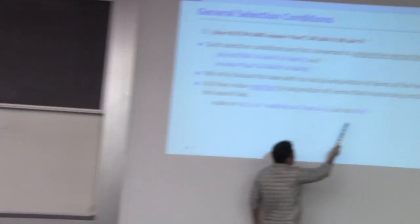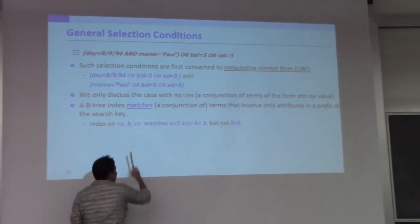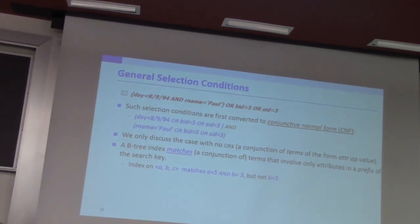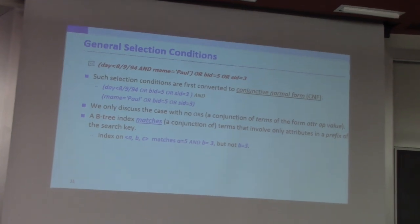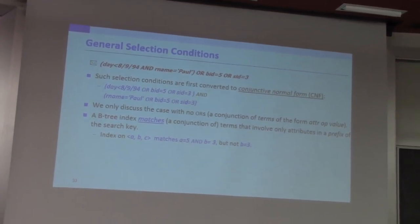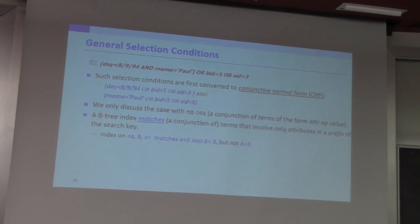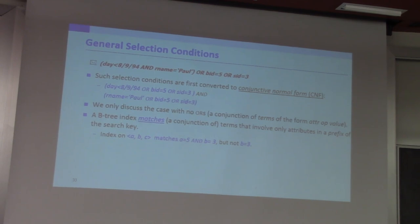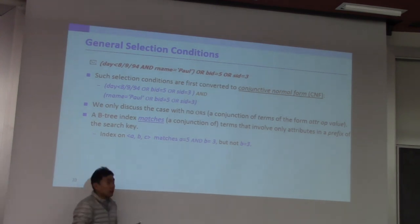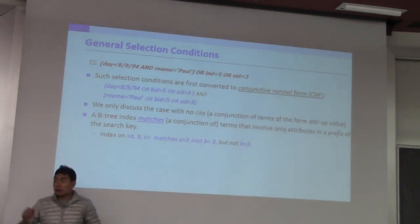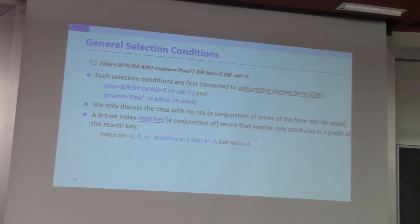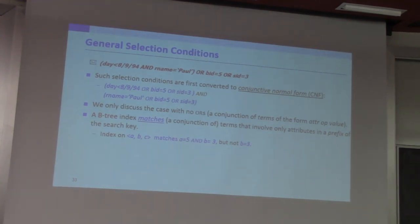To summarize: if you only have the condition B equal to 3 and the index is on A, B, C, it is not a prefix of your search key. Those data entries are not sorted with the value of B. But this is not true if your search condition is A equal to 5 AND B equal to 3, because that IS a prefix of A, B, C. So your data entries must be sorted with values A and B, and I can use this index to answer that query — but not the query where only B equals 3.